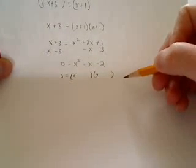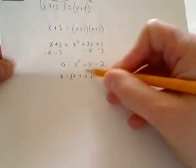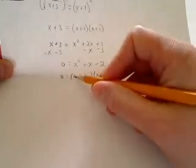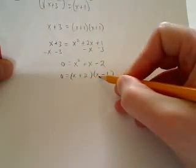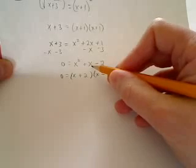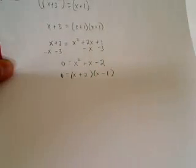So when I distribute back out, I'd get x squared. Outside term is negative 1x. Inside term is positive 2x. Well, that will get me to positive 1x. And then the last term, 2 times negative 1, which is negative 2.